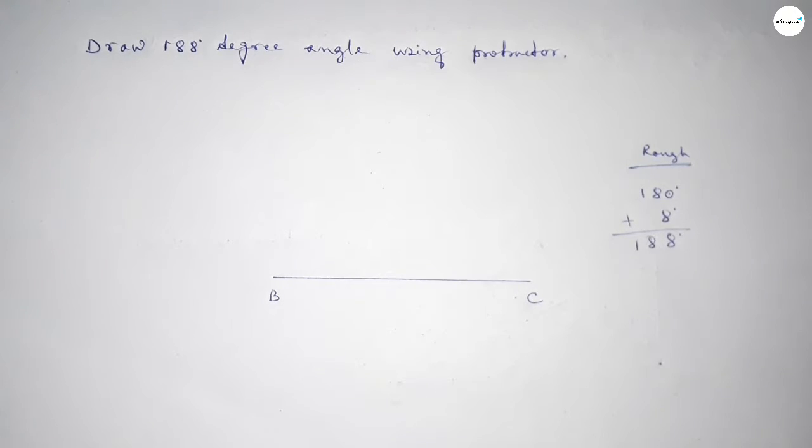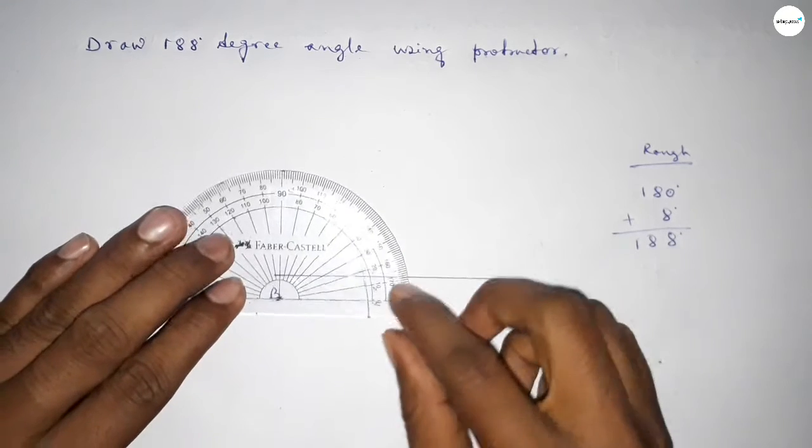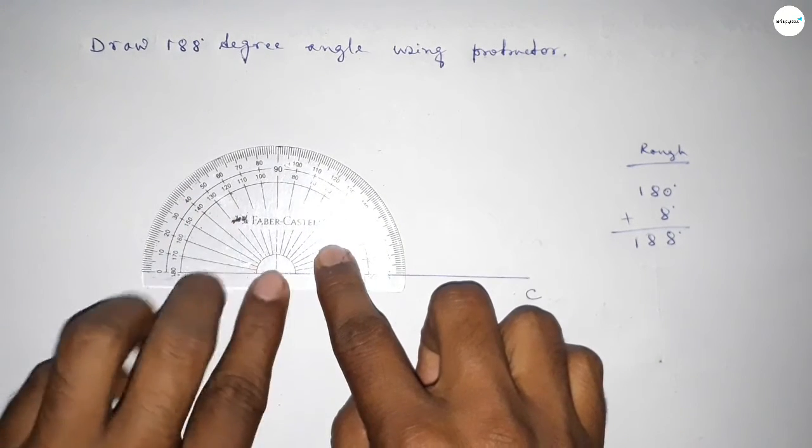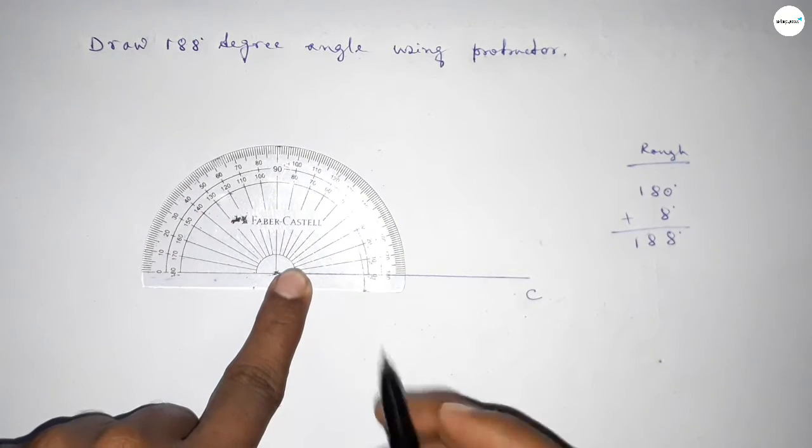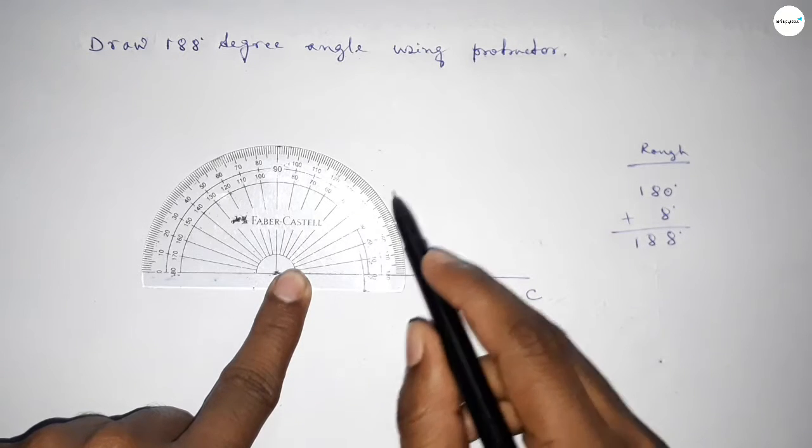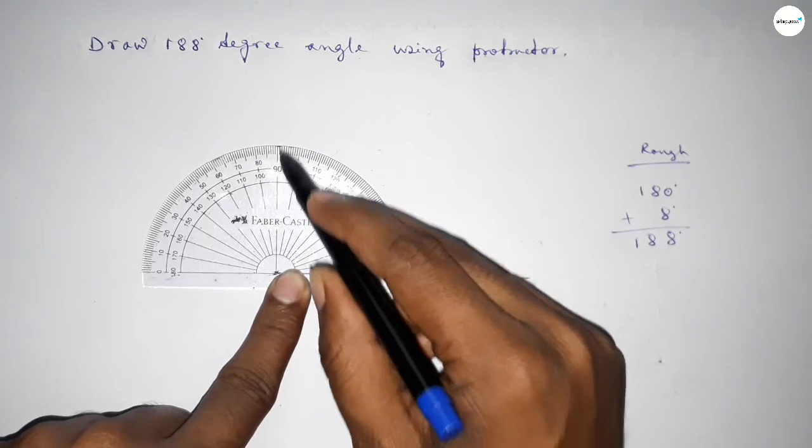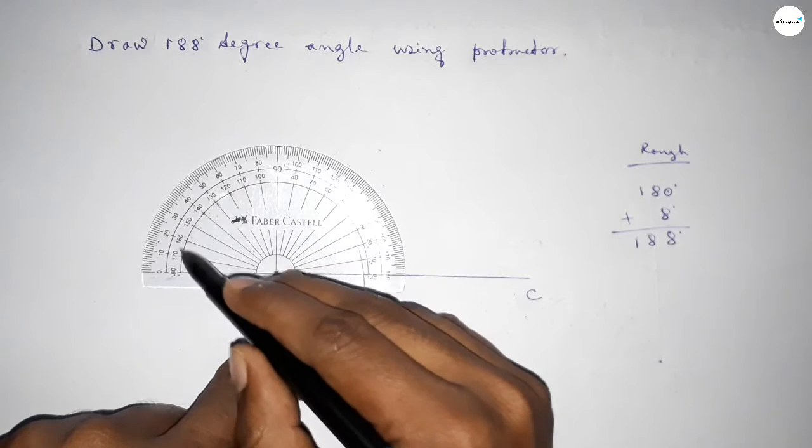So first we have to count 180 degree angle. So putting the protractor on the point B and counting the angles: 0, 10, 20, 30, 40, 50, 60, 70, 80, 90, 100, 110, 120, 130, 140, 150, 160, 170, 180. So this is 180 degree.